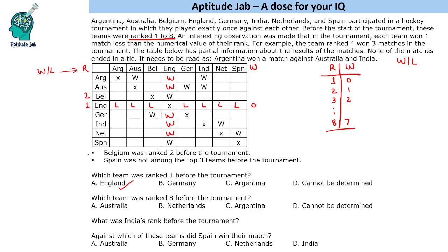Belgium was ranked 2, which means they have 1 win in the tournament. Looking at the table, we already know that 1 win. So Belgium has 1 win, and all their other remaining matches are losses. Since Belgium lost all other matches, all remaining teams will win a match against Belgium.